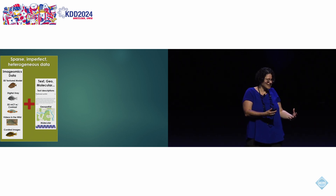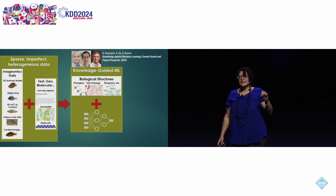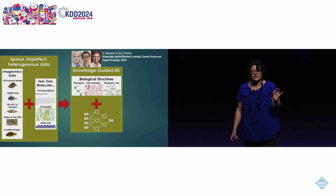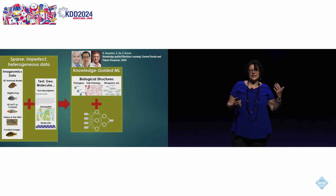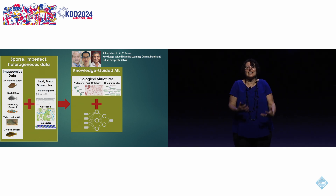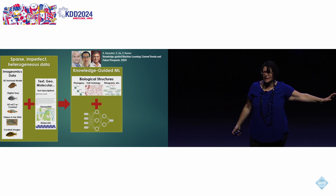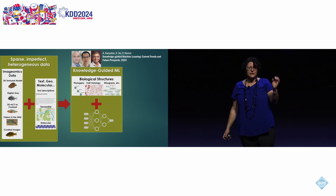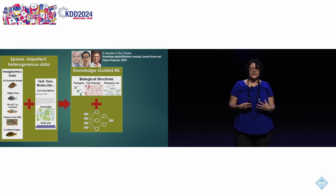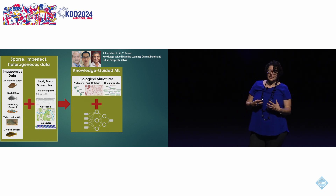The reason we think we can do it now is that we have massive collections of images — yes, biased, but in many different spectra and views of organisms. We also have a lot of other information connected to these images: text, geospatial information, genotype, and other molecular information. And biology is the science of structures — phylogeny, evolutionary trees, taxonomy, ontologies — leveraging these structures to constrain the architecture of machine learning models. That's the knowledge-guided machine learning approach.